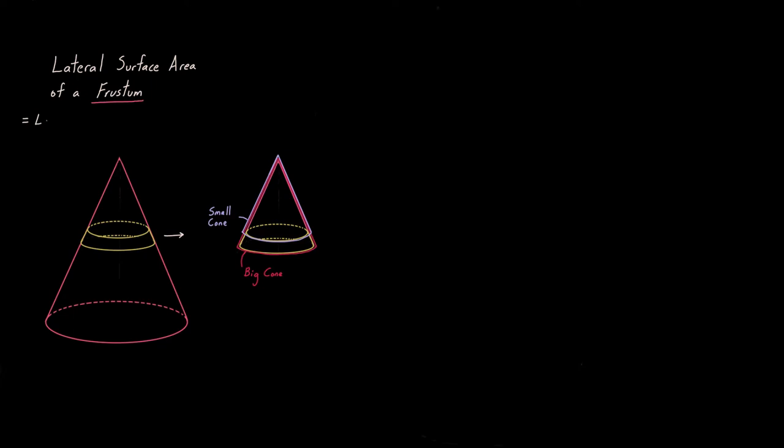So the lateral surface area, the amount of space that frustum takes up, is going to be the lateral surface area, the amount of space the big cone takes up excluding its base, that's why we're going to call it lateral surface area, minus the lateral surface area of the small cone. Again, lateral for a cone means we're ignoring that circular base, we just care about the surface area on the sides.